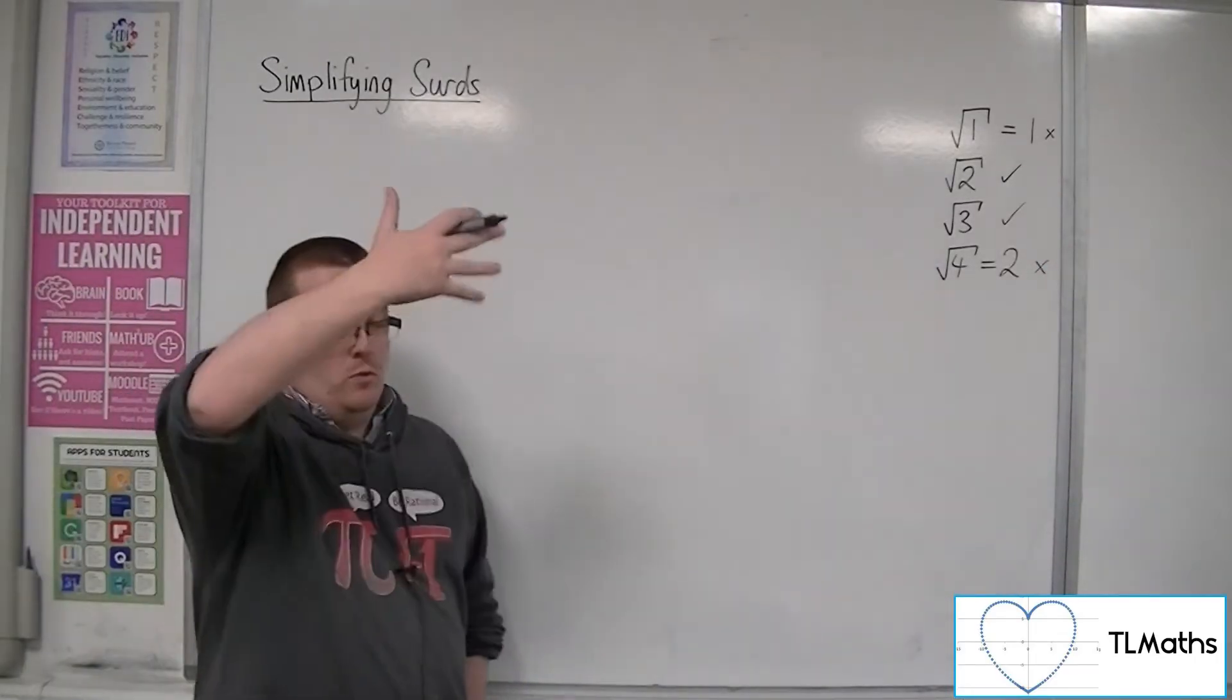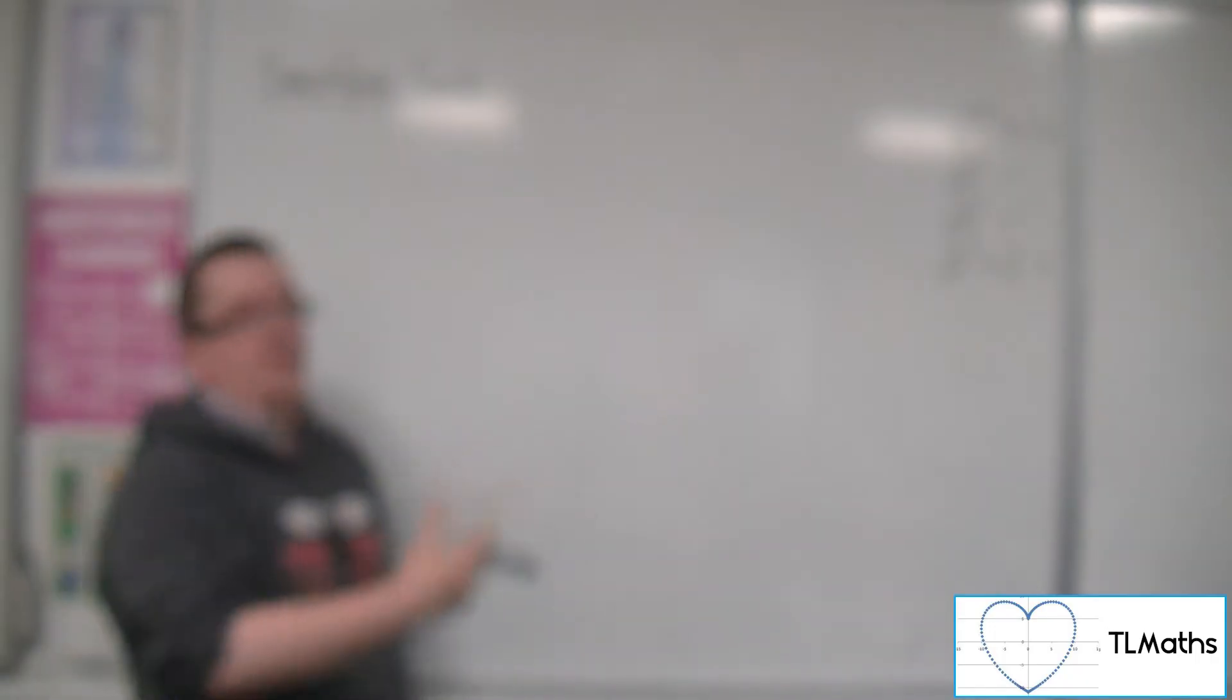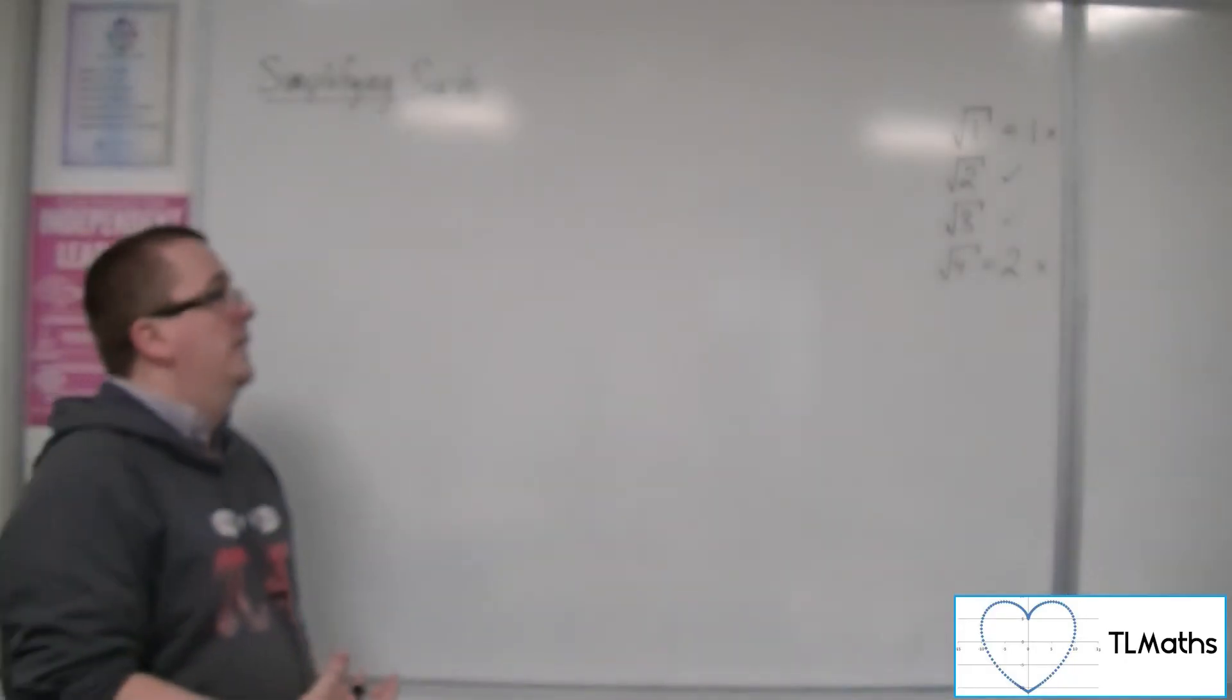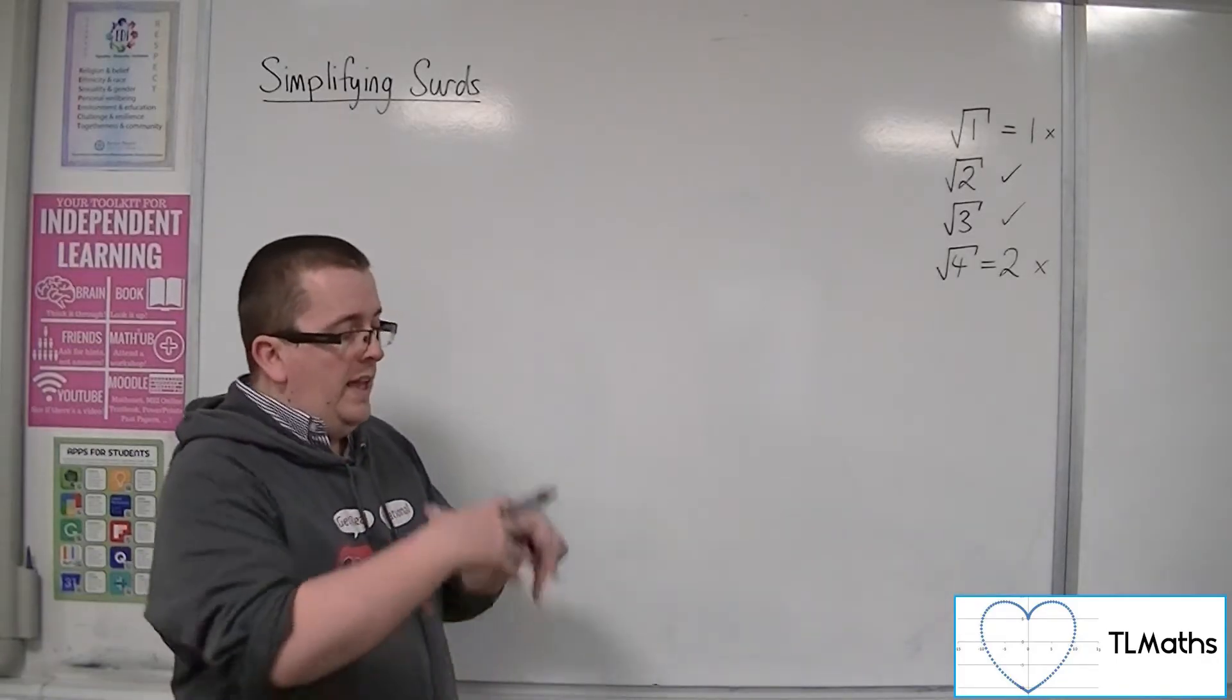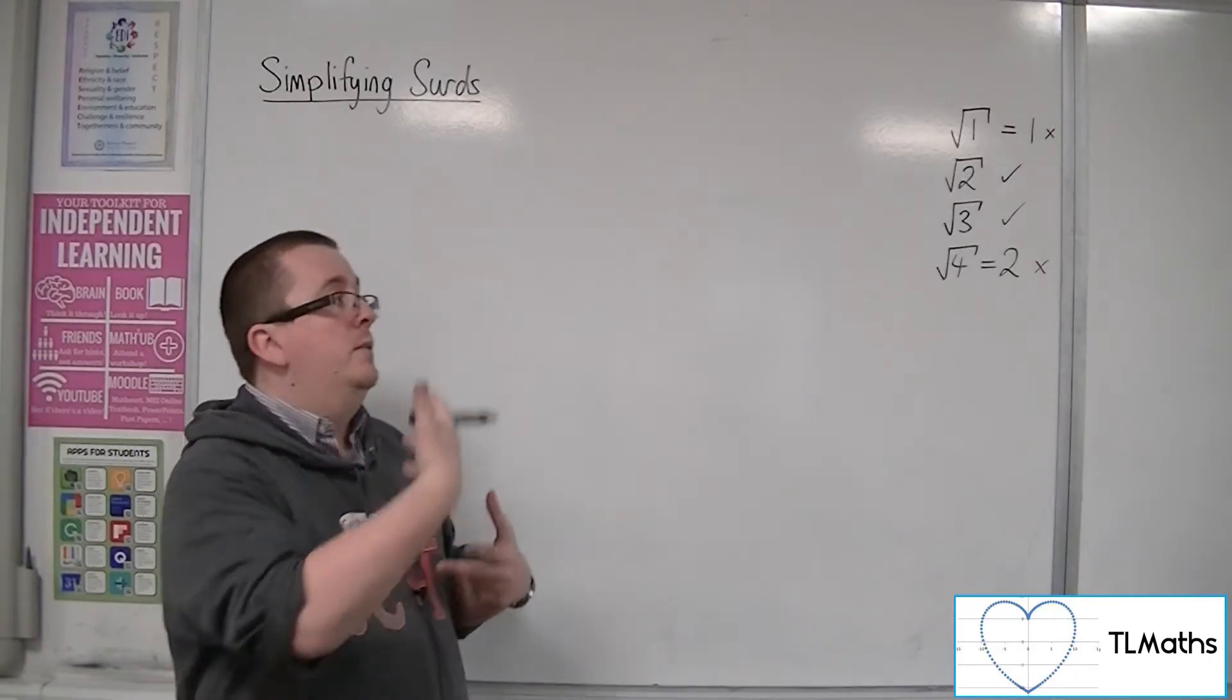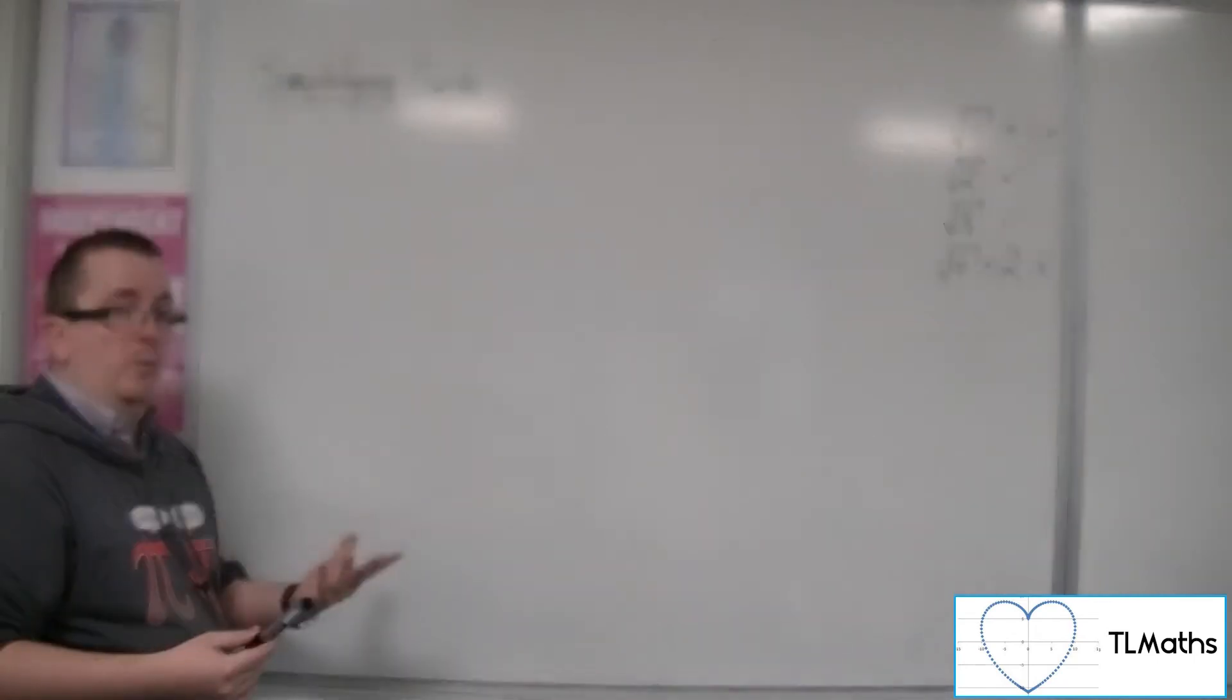So you can quite easily build up a list of numbers that are surds. Root 5 would be the next one, root 6 would be the one after. So any number under the square root sign, if it is a square number, then obviously root of that will give us a whole number. So that would not be a surd, but anything else will be.